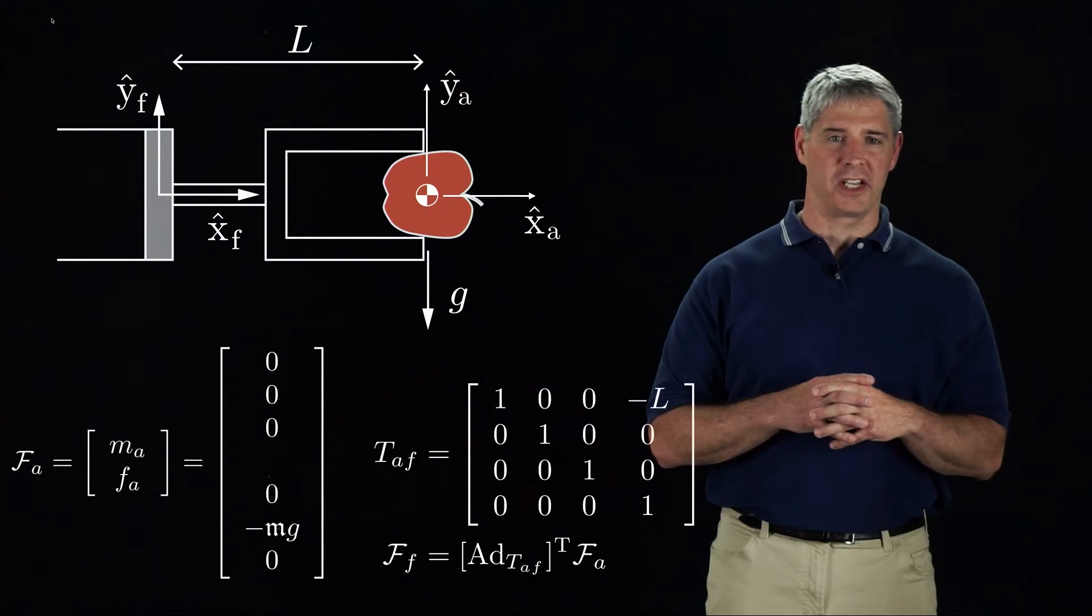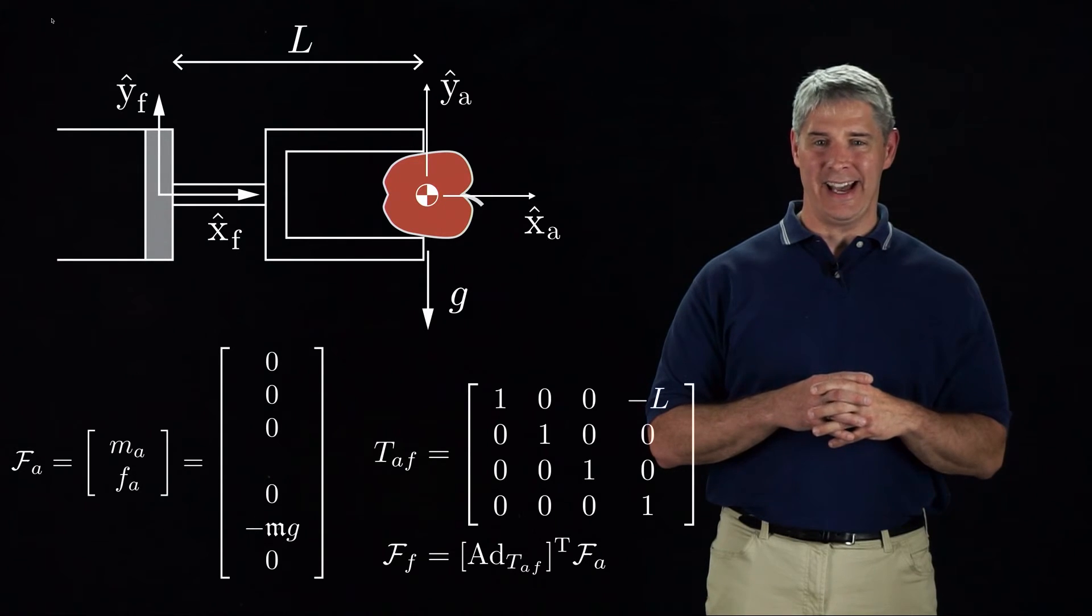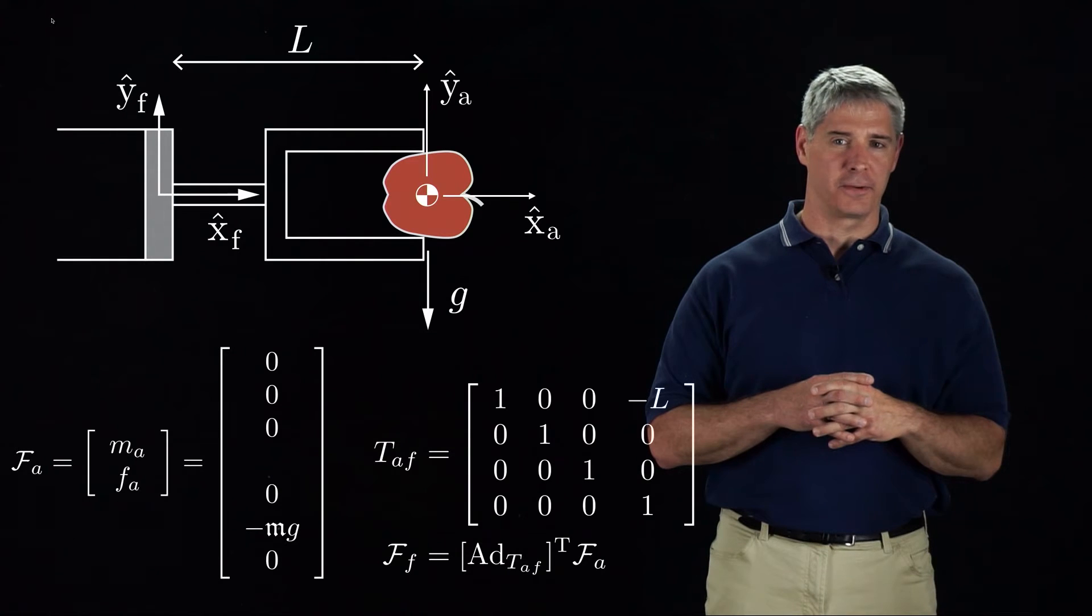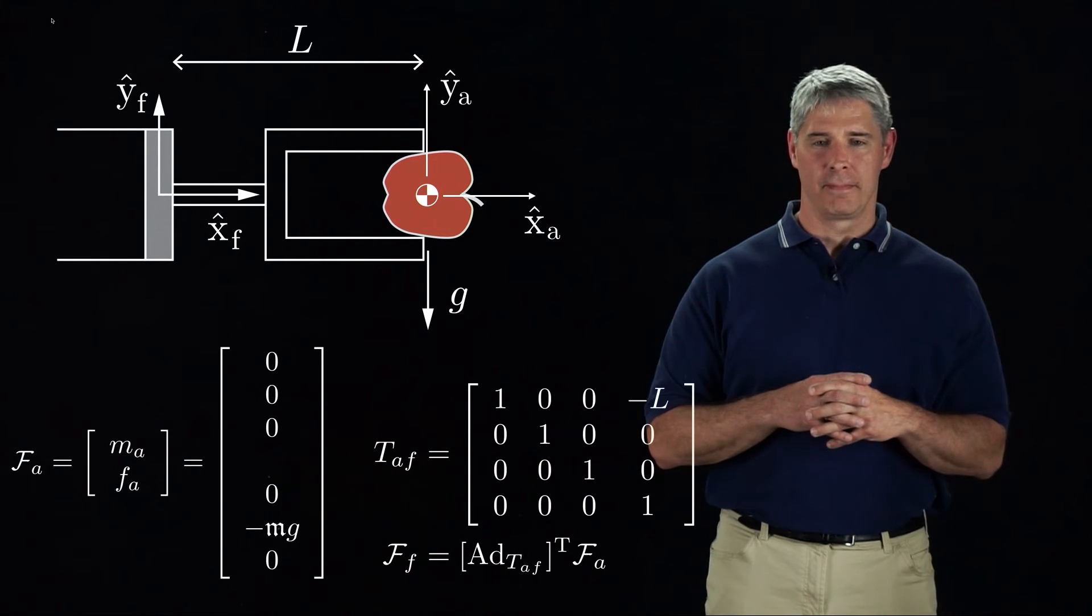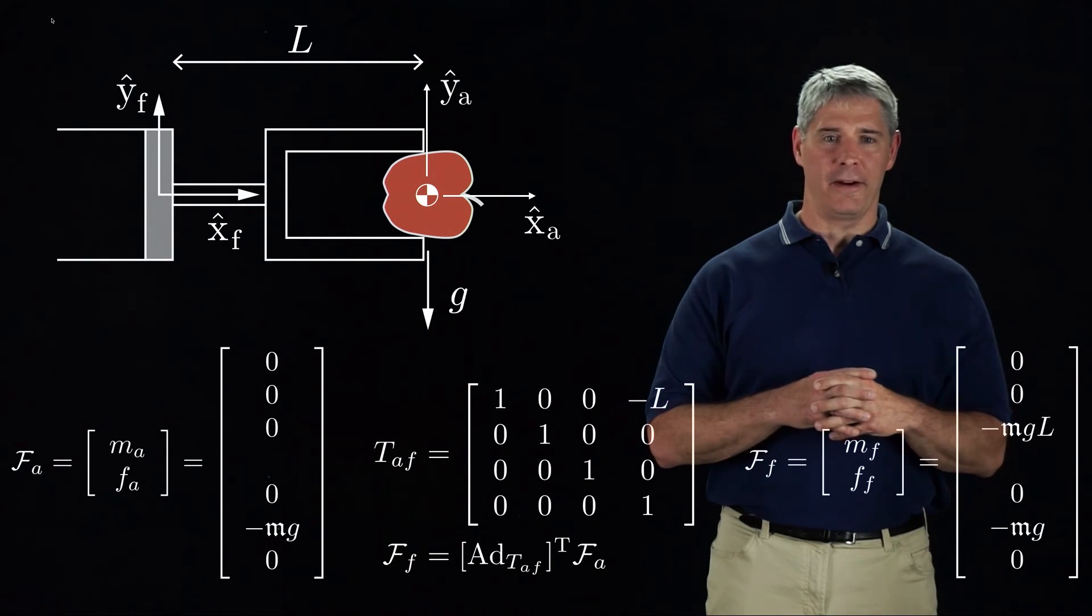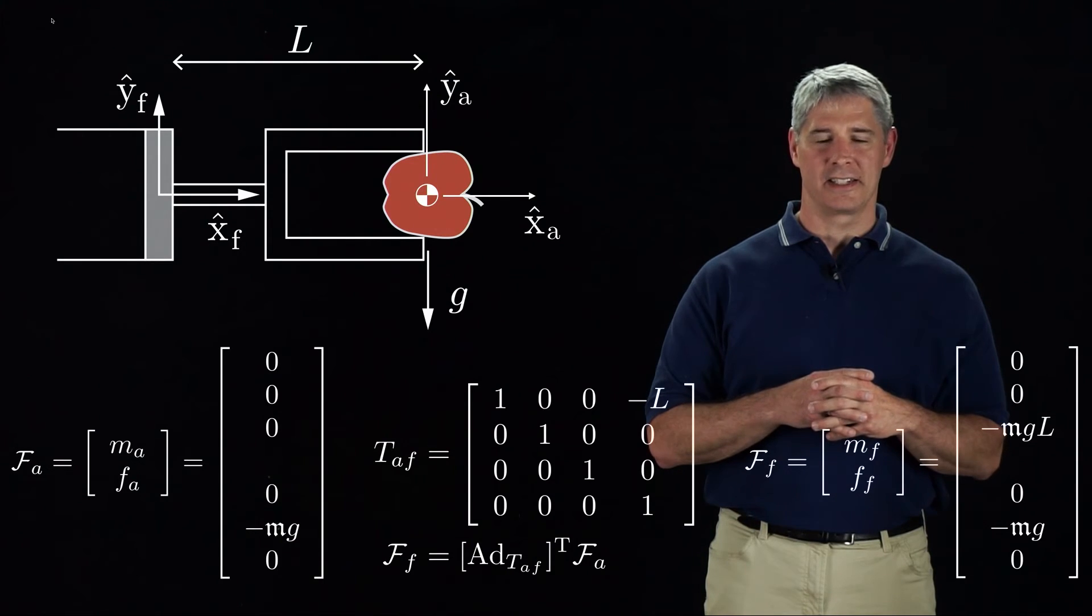To transform to the force sensor frame, we use TAF, the configuration of the force sensor frame relative to the apple frame, and we see that the wrench FF has a moment of negative MgL about the z-axis of the F frame.